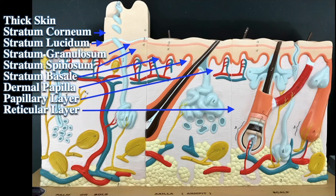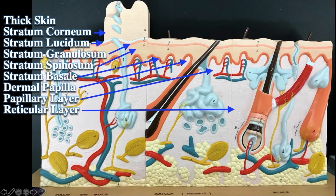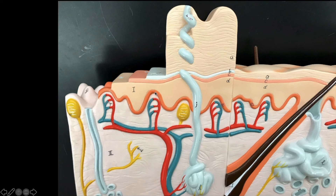I do have another video of the skin, so I won't go through this in detail, but here is your Pacinian corpuscle — it looks like an onion. And your Meissner's are there, kind of sticking up in the dermal papilla.